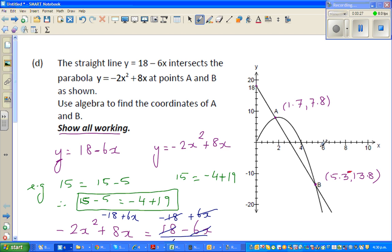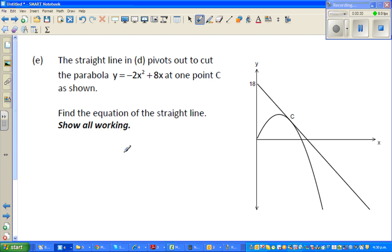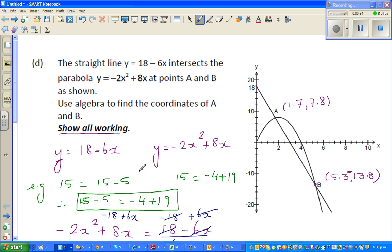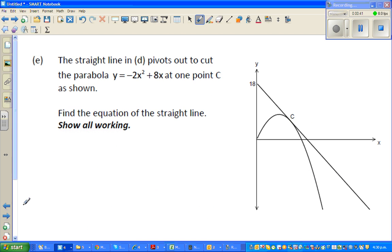So continuing with the same question, not the same question, slightly changed in the sense that this line pivots, means it moves like this and just touches the parabola. So it says pivots out to cut, suppose this is the pivot point, it was previously like this and it pivots and it just touches or it cuts the parabola at only one point C.